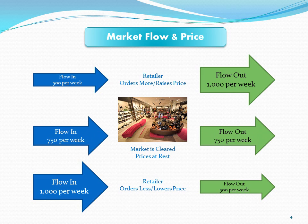If the markets are free to adjust, decisions will continually adjust and prices will adjust. Eventually the market will bring into balance the flows in and out. Here I have 750 pairs per week flowing in and 750 pairs per week flowing out. We would say that the market is cleared — what is coming in is going out, and there's no reason for prices to change.